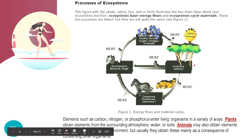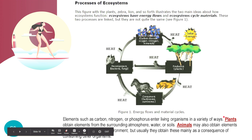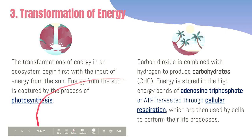Living organisms are capable of cycling and recycling materials in an ecosystem. Elements such as carbon, nitrogen, and phosphorus enter living things — for example, plants obtain these materials from their environment, from the atmosphere and from the soil through their roots, while animals obtain these elements whenever they consume other organisms.